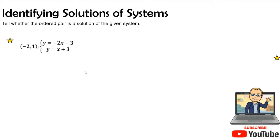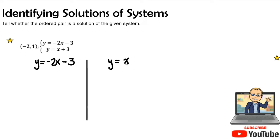The first thing I'm going to do is divide each of the equations into two sides to keep it organized. We have y equals negative 2x minus 3, and y equals x plus 3. Our ordered pair is negative 2, 1, so the x value is negative 2 and the y value is positive 1. Wherever I see x and y in these linear functions, I'm going to plug in those particular numbers.